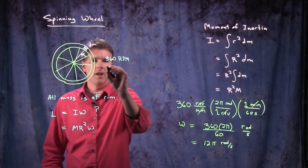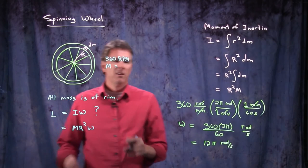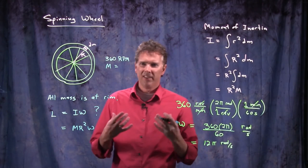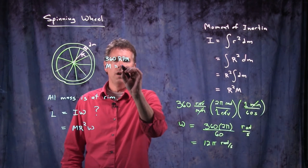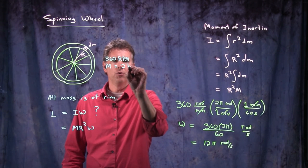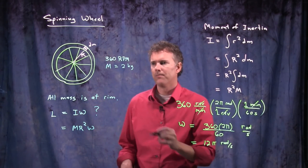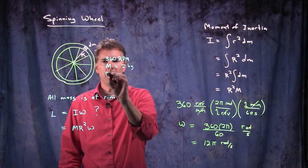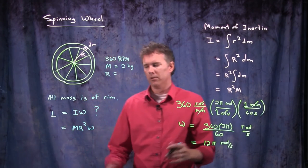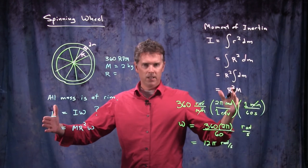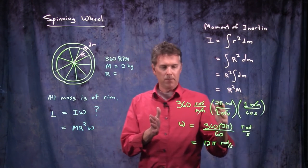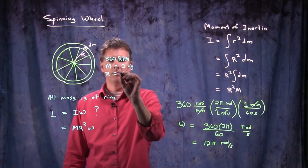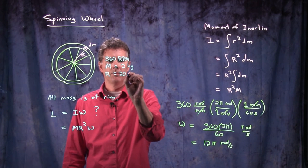So we're going to say that the mass, what's the mass of a bicycle wheel? It's not that heavy. It's maybe one or two kilograms. Let's say it's two kilograms. And let's say that the radius of the wheel, how big is a wheel? It's about like that in diameter. So the radius is probably maybe about 20 centimeters.